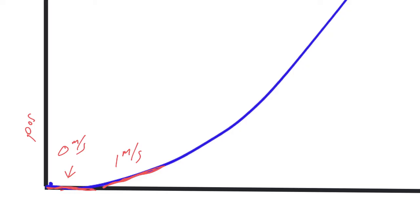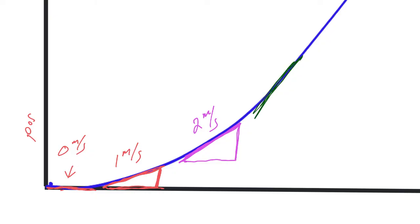A little further along, you can see it's a steeper slope, which means we're traveling a further distance in that period of time — maybe two meters per second. Back in that first part of the curve we're only traveling one meter per second. Even further along, the slope is steeper still — maybe three meters per second.